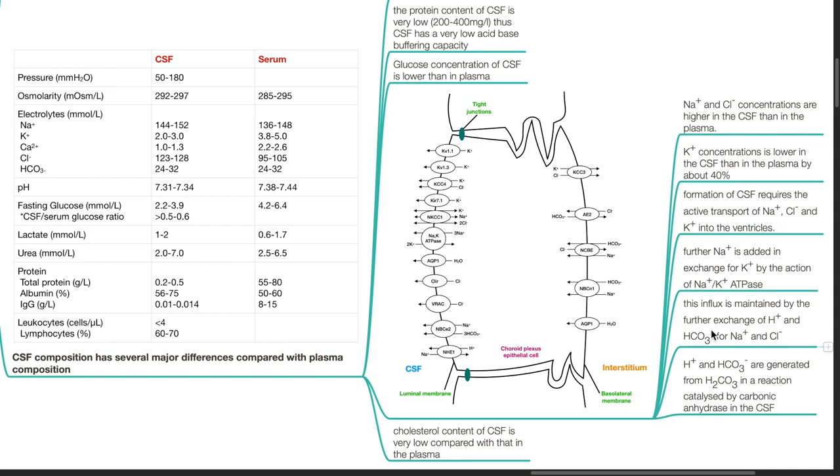This influx is maintained by the further exchange of hydrogen ions and bicarbonate for sodium and chloride. Hydrogen ions and bicarbonate ions are generated from H2CO3 in a reaction catalyzed by carbonic anhydrase in the CSF.